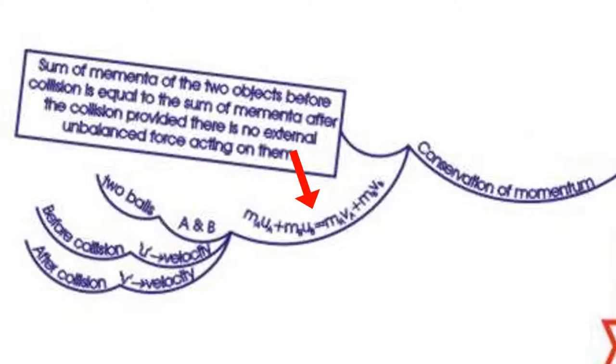Conservation of momentum can be represented with an equation as shown here. In this equation, a and b are two balls and u is the velocity before collision and v is the velocity after collision.